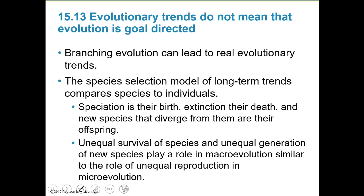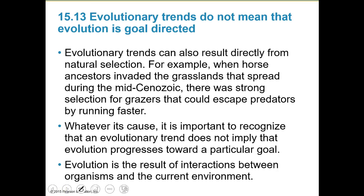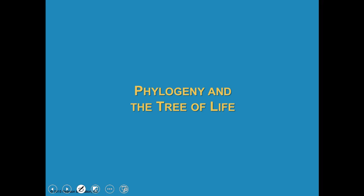Branching evolution can lead to real evolutionary trends. Some evolutionary trends can result directly from natural selection. When horse ancestors invaded grasslands that spread during the mid-Cenozoic, there was a strong selection for grazers that could escape predators by running faster. It's important to recognize that an evolutionary trend does not imply that evolution had a particular goal. Natural selection tends to be almost random - it just moves toward the things that are already there and adapts to whatever environmental conditions are present. Evolution is a result of interactions between organisms and their current environment.